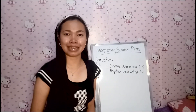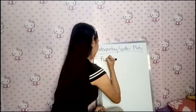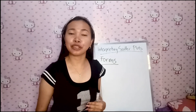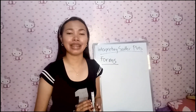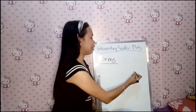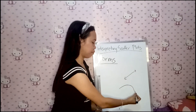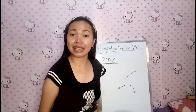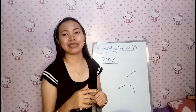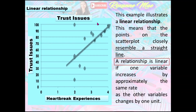Now, let us interpret scatterplots based on their form. Another important component to a scatterplot is the form of the relationship between the two variables. It could have a linear relationship or a curvilinear relationship. This example illustrates a linear relationship. This means that the points in the scatterplot closely resemble a straight line. A relationship is linear if one variable increases by approximately the same rate as the other variable changes by one unit.